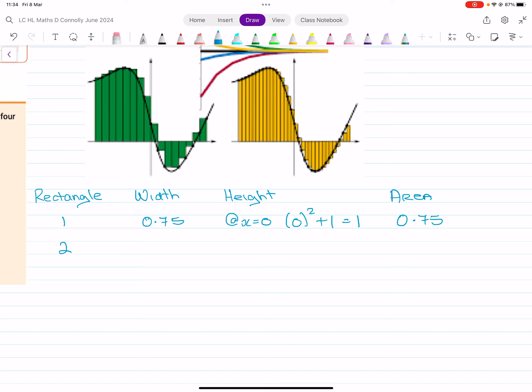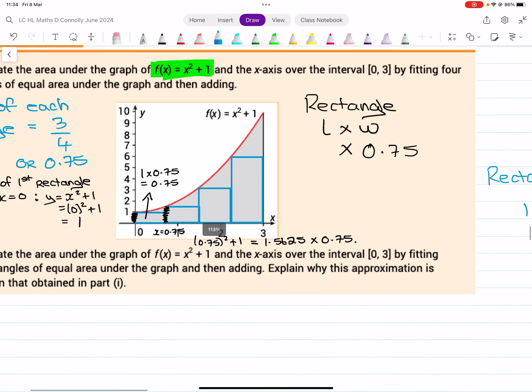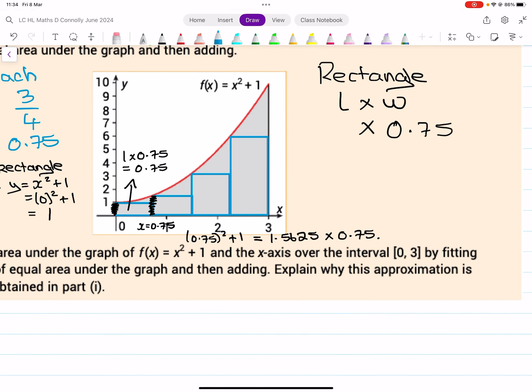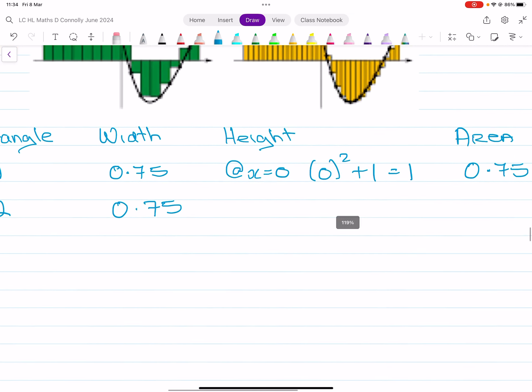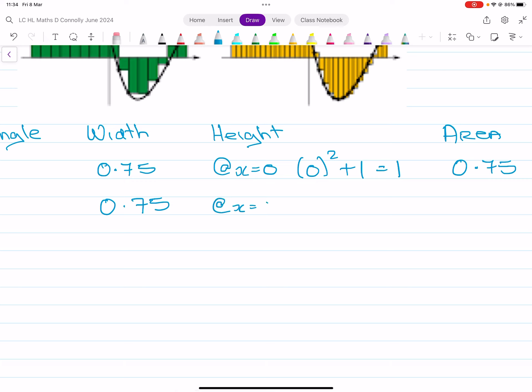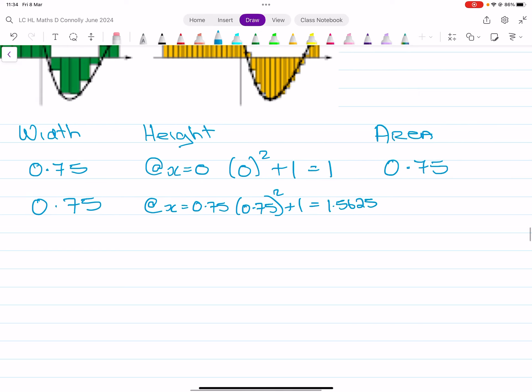For rectangle number two, the width is going to be 0.75. The height of rectangle number two is the y value when x is 0.75, so it's at x equal to 0.75, which becomes 0.75 squared plus one. That's 1.5625, and then to get the area you multiply them together, so multiply by 0.75, and I'm getting 75 over 64.